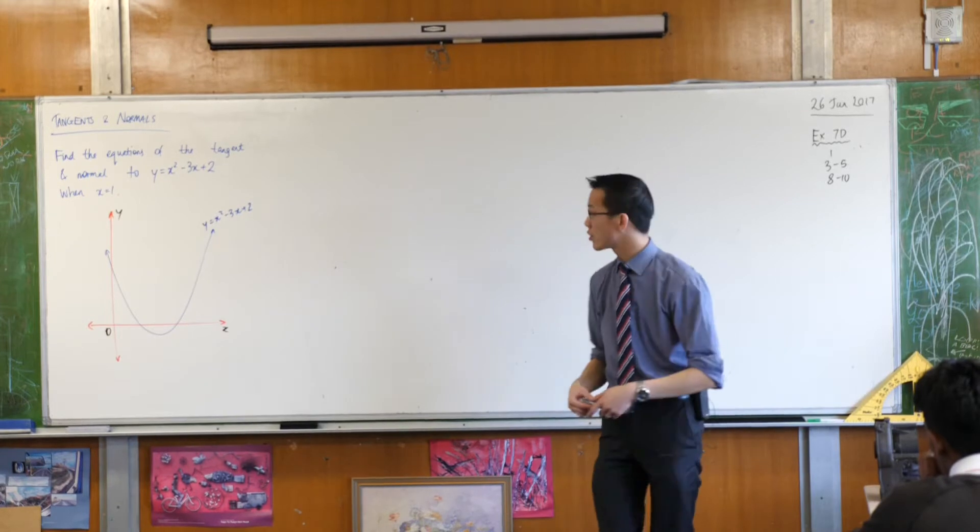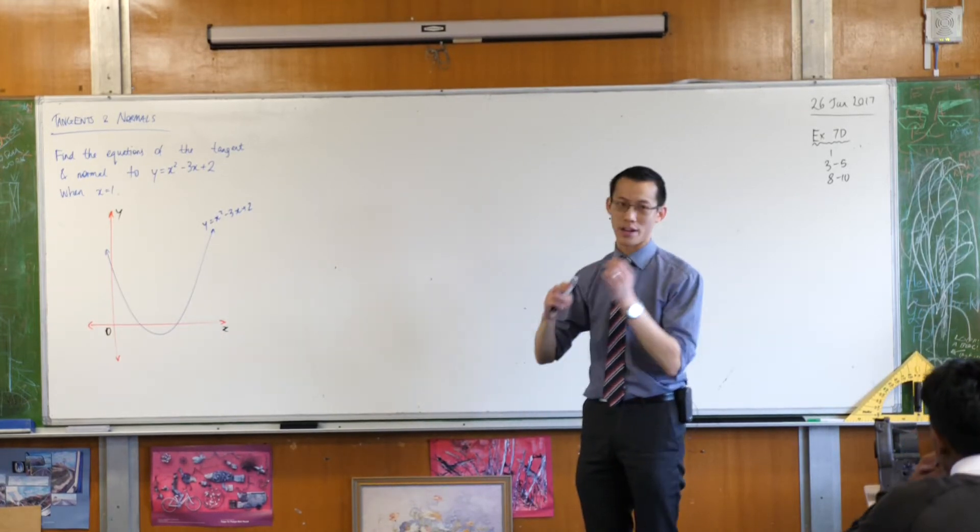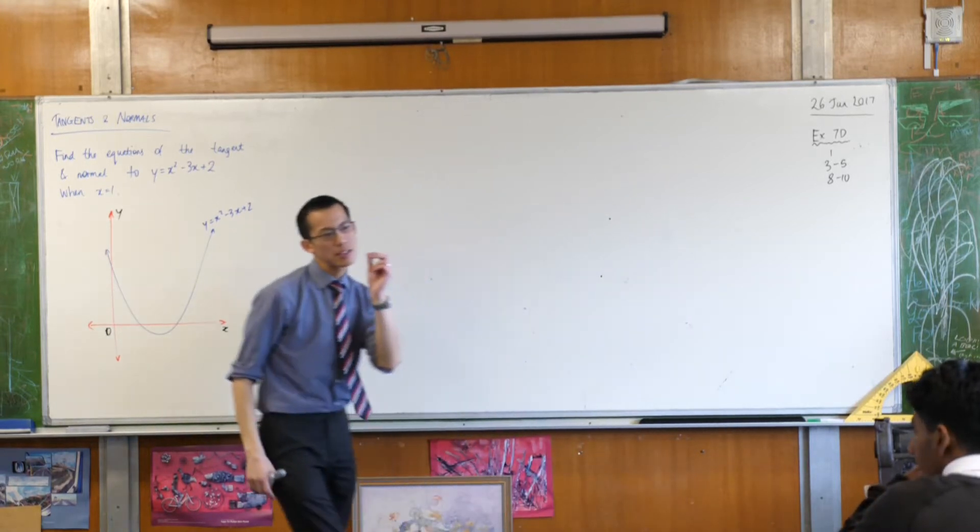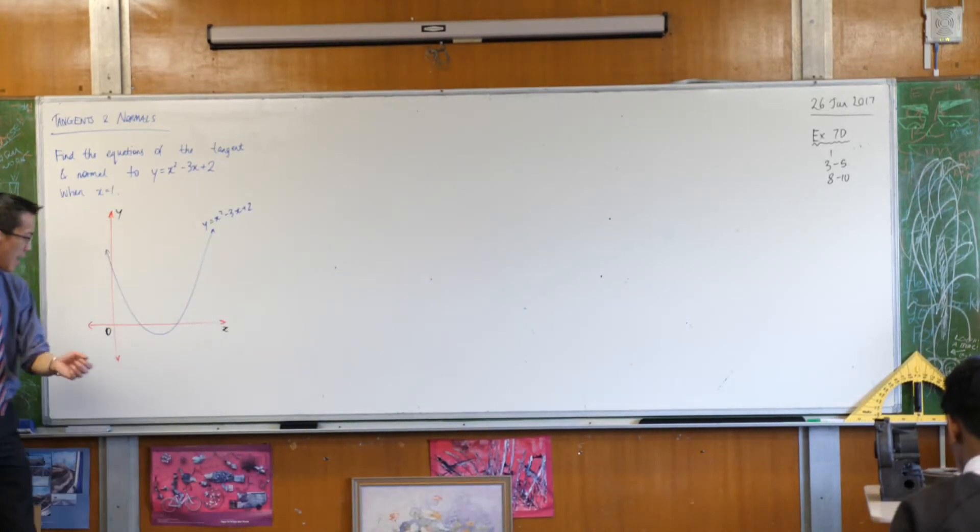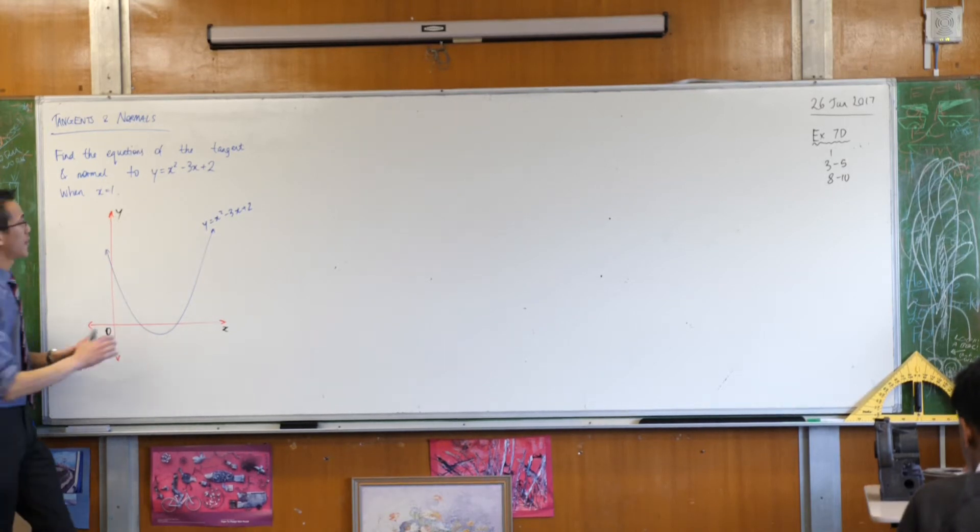A better definition for a tangent, a more concrete definition now that we've got all the language for it, is it's a line that shares the same gradient as a curve where they intersect. Let me say that again. In fact, I'll write it down.